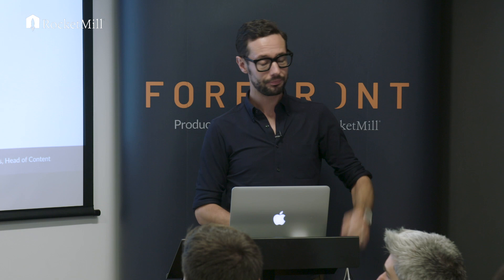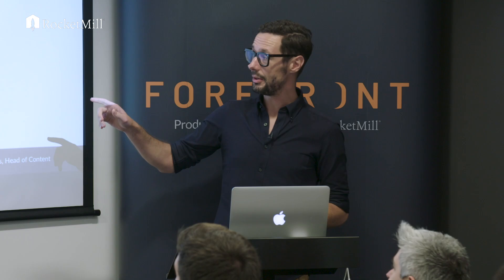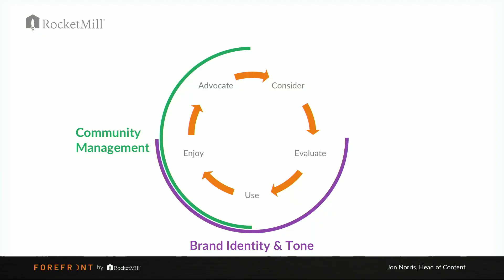Their business was growing faster than they could scale their support team. This was creating a really big backlog of support tickets and users who didn't know what they were doing and couldn't get help. As a result, they didn't even get to the enjoy phase — they got quite frustrated, leading to a really large churn rate and dropping net promoter score. Their roadblock was around turning users from just users into really passionate advocates.